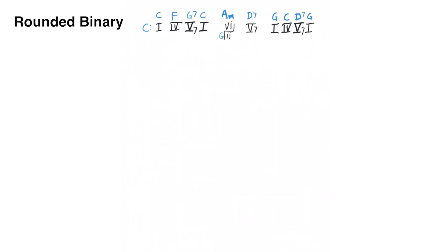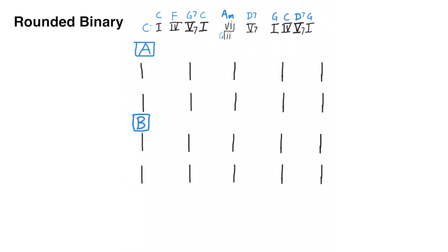Now let's take this chord progression and expand it out into our first large form: rounded binary. Binary is a two-part form. We'll call the first section the A section and the next section the B section. I have set up each section as eight measures so they correspond to the small forms that we have studied previously — period forms and successive phrases.